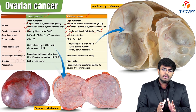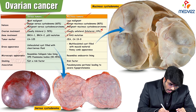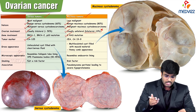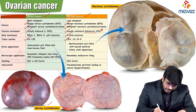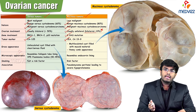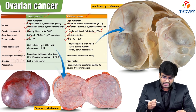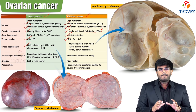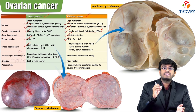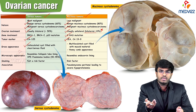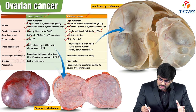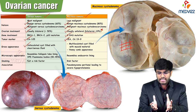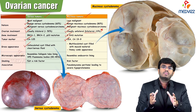Tumor markers: for serous tumors — CA-125; for mucinous tumors — CA-19-9 and carcinoembryonic antigen (CEA). Grossly, serous tumors are unilocular filled with clear serous fluid; mucinous tumors are multilocular due to septa, giving a honeycomb appearance, filled with mucinous material.